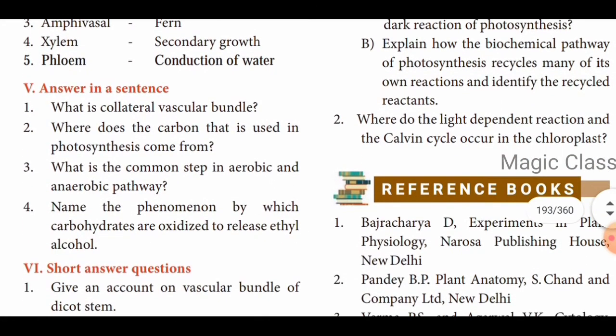Answer in a sentence. First: what is collateral vascular bundle? It is one type of conjoint vascular bundle in which xylem lies towards the center and phloem lies towards the periphery. Second: where does the carbon used in photosynthesis come from? The carbon used in photosynthesis comes from carbon dioxide in the air.